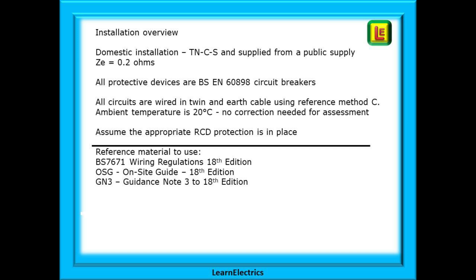All the circuits are wired in twin-and-earth cable using reference method C or clipped direct and the ambient temperature is 20 degrees centigrade with no correction needed for the assessment. Also assume that the appropriate RCD protection is in place.